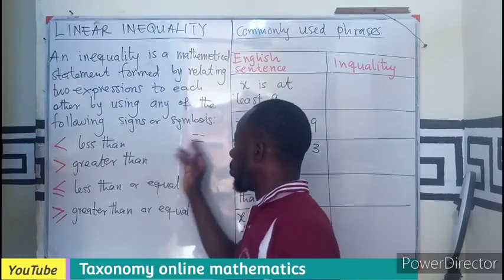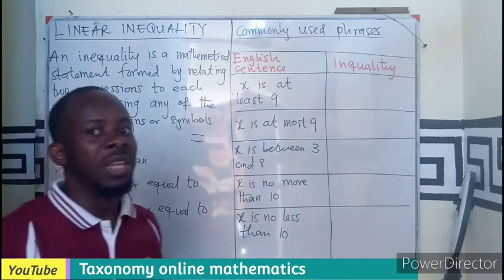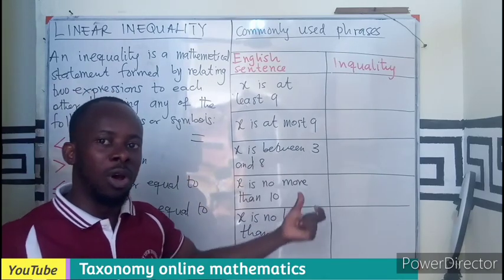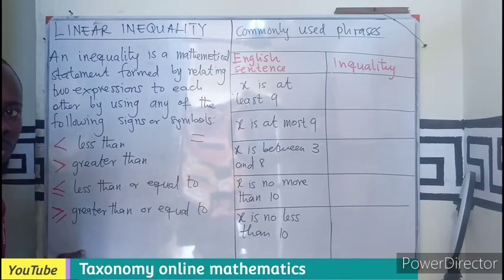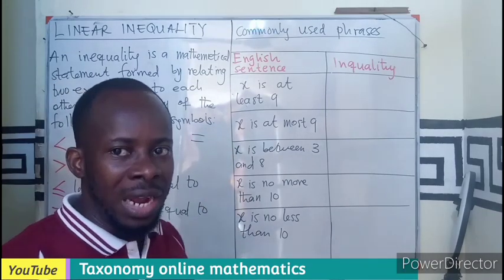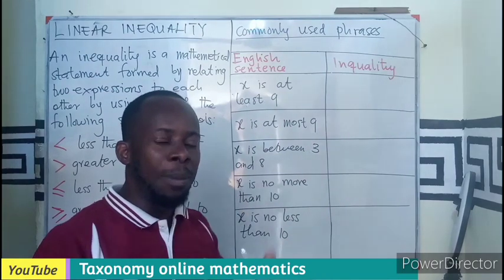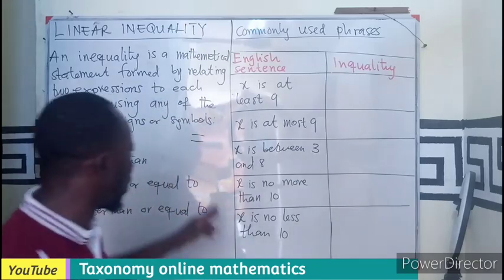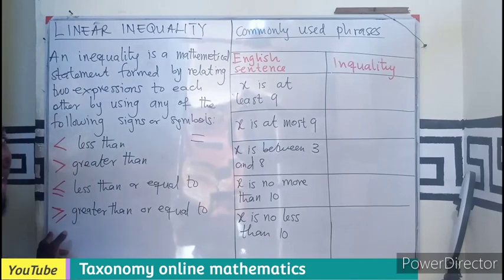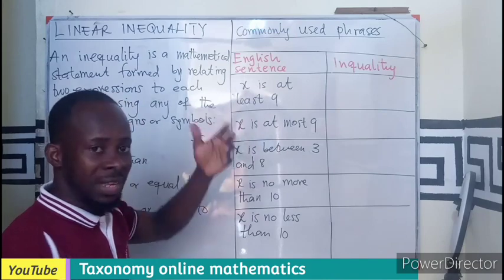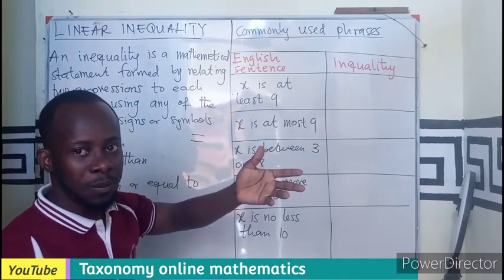Now let's see how these symbols translate into sentence form. Under linear equations, we know that the word 'is' in a sentence refers to the equal sign. So what words or phrases will these inequality symbols correspond to in an English sentence? Here x is standing for a variable.